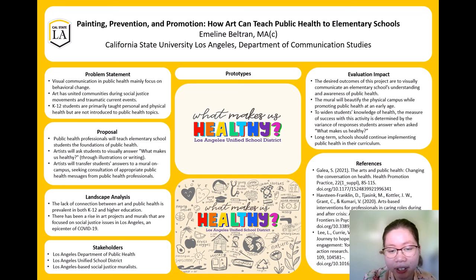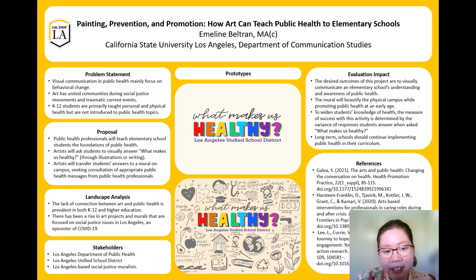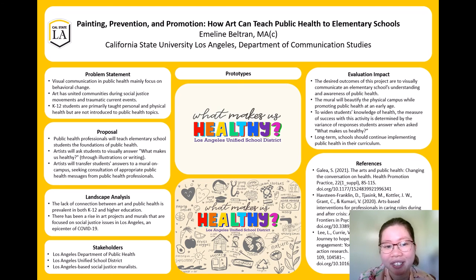With this activity, students should be able to name various contributing factors of their individual and community health. To widen students' knowledge of health, the measure of success with the activity is determined by the variance of responses when students answer 'what makes us healthy.' Students' answers should touch on a wide range of public health topics such as mental health and health equity. Another indicator of this community action plan's success is the continued discussion of public health on campus and throughout the district. This is the conclusion of my poster presentation, and I thank you for your time.